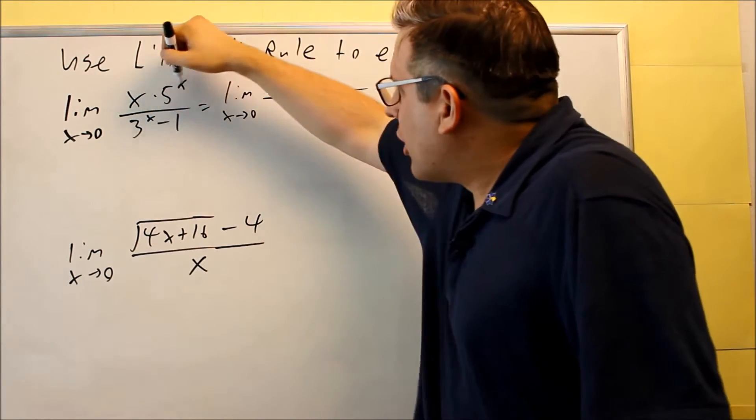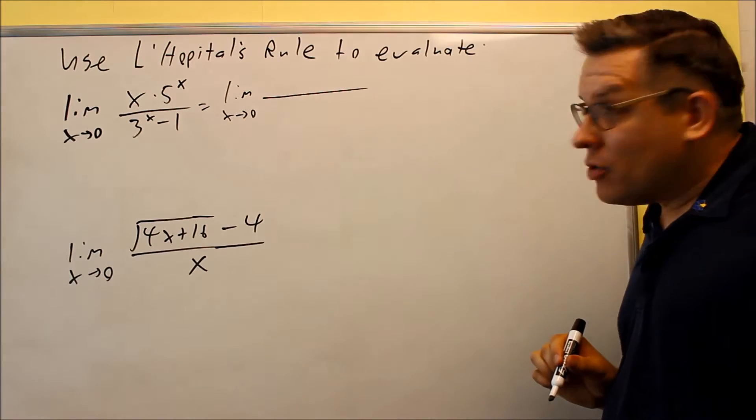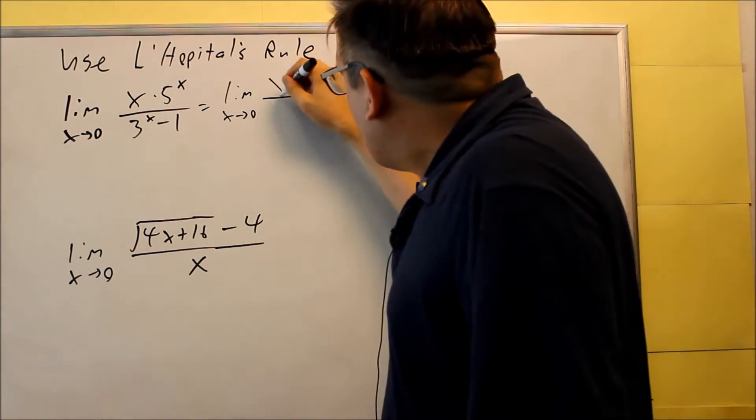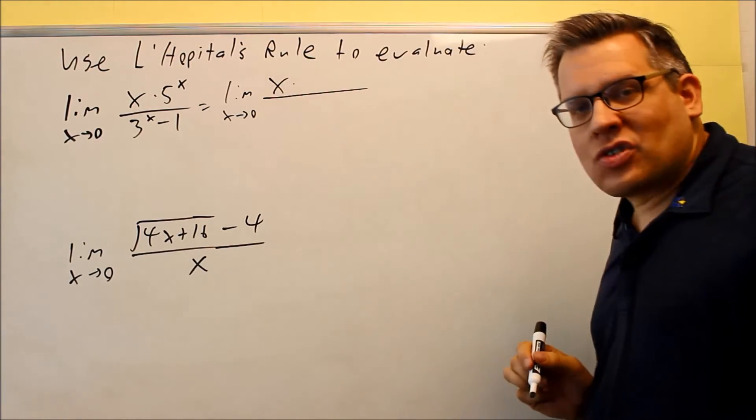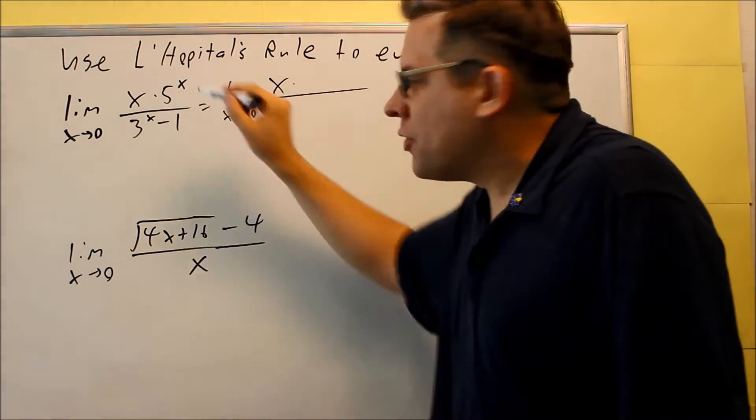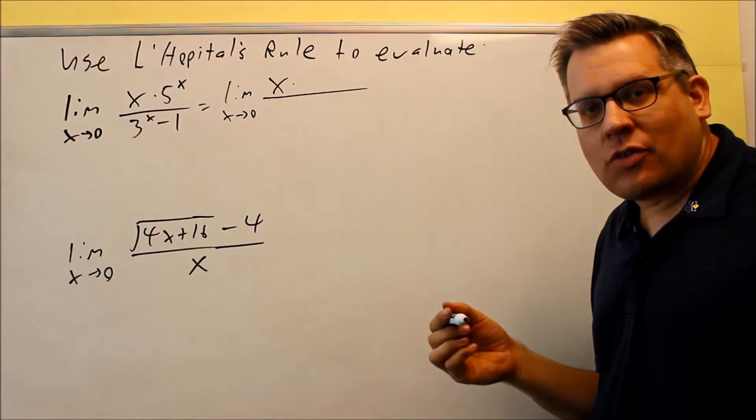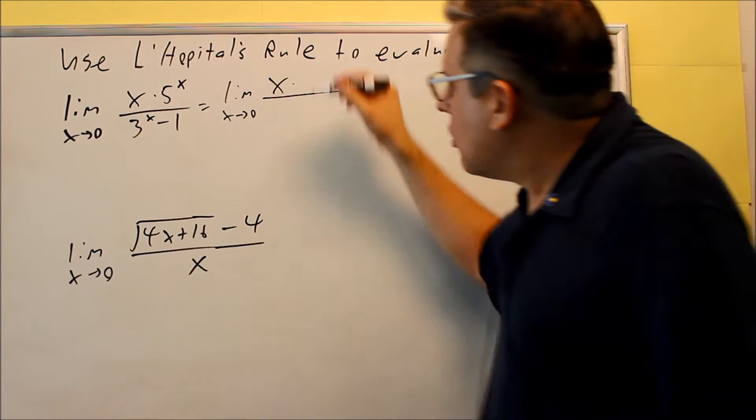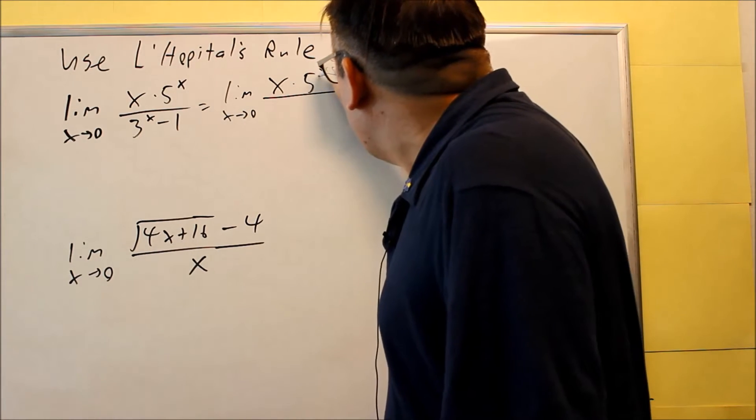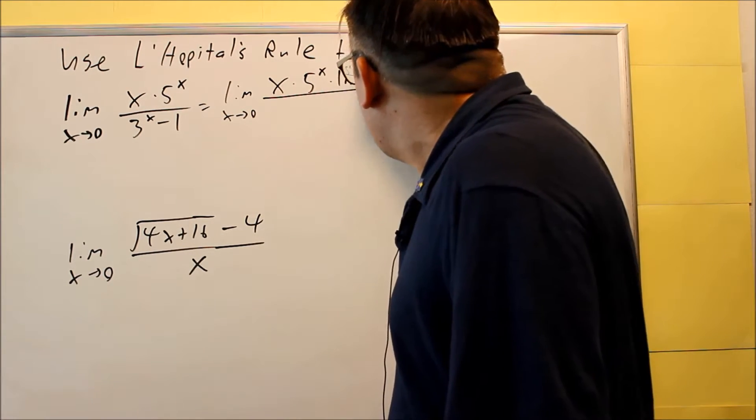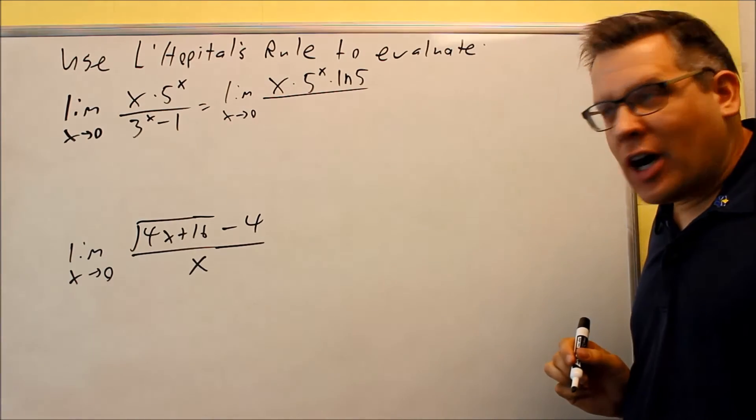When you do the product rule for the top part, you have two things multiplied together: the first thing times the derivative of the second. For a derivative of a^x, the derivative is a^x times ln(a). So following the formula, we get 5^x times ln(5).